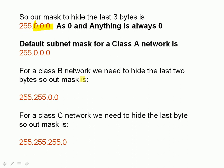For a class B network, we need to hide the last two bytes, so our mask is 255.255.0.0, which gets rid of those last two bytes. And for a class C network, we need to hide the last byte, so we have a default subnet mask of 255.255.255.0.